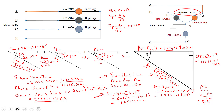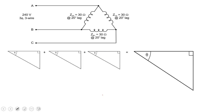Now let's look at a delta circuit. In this delta circuit we have an impedance of 30 ohms in each phase, all at 20-degree lag, so this is a balanced circuit. The supply voltage is 240 volts. Because impedance and angle are the same in each phase, I really only need to figure out values for one phase and then multiply by three.